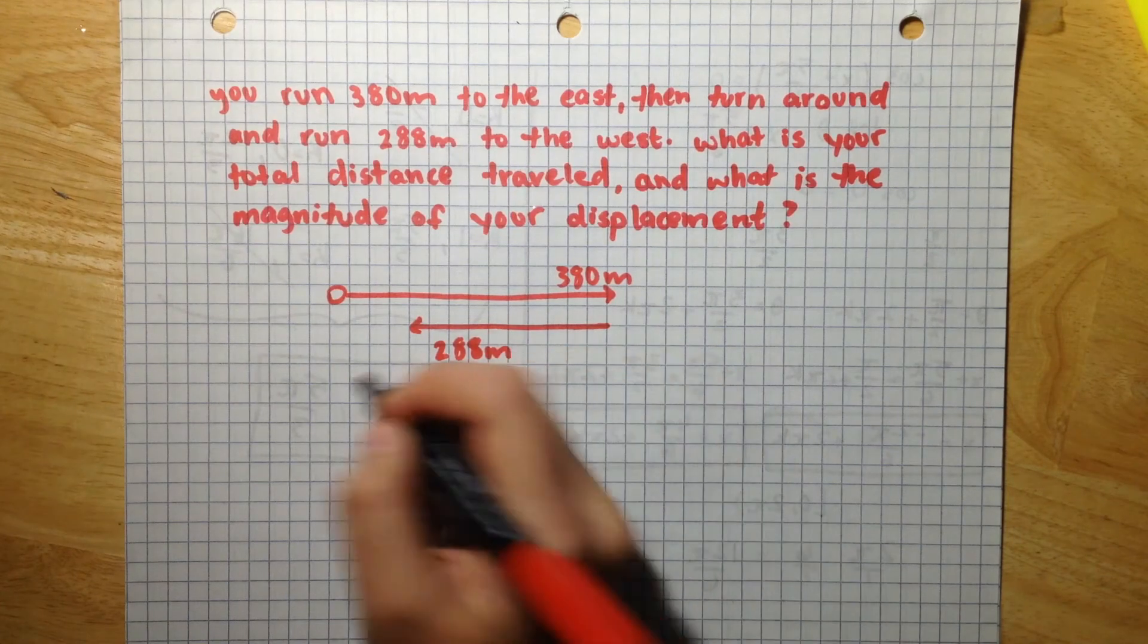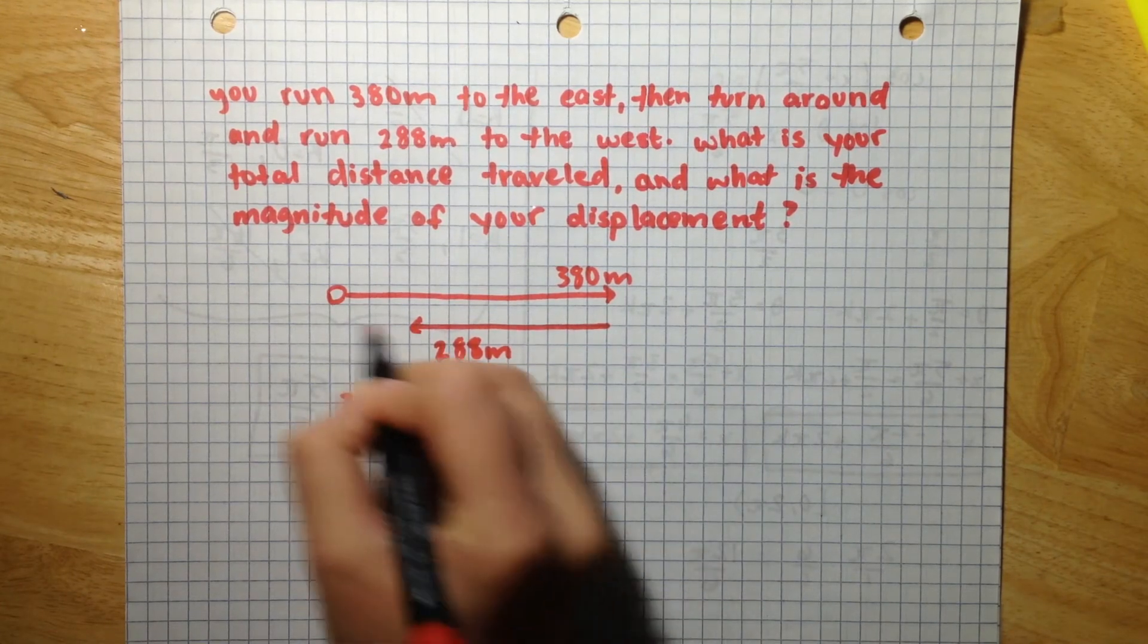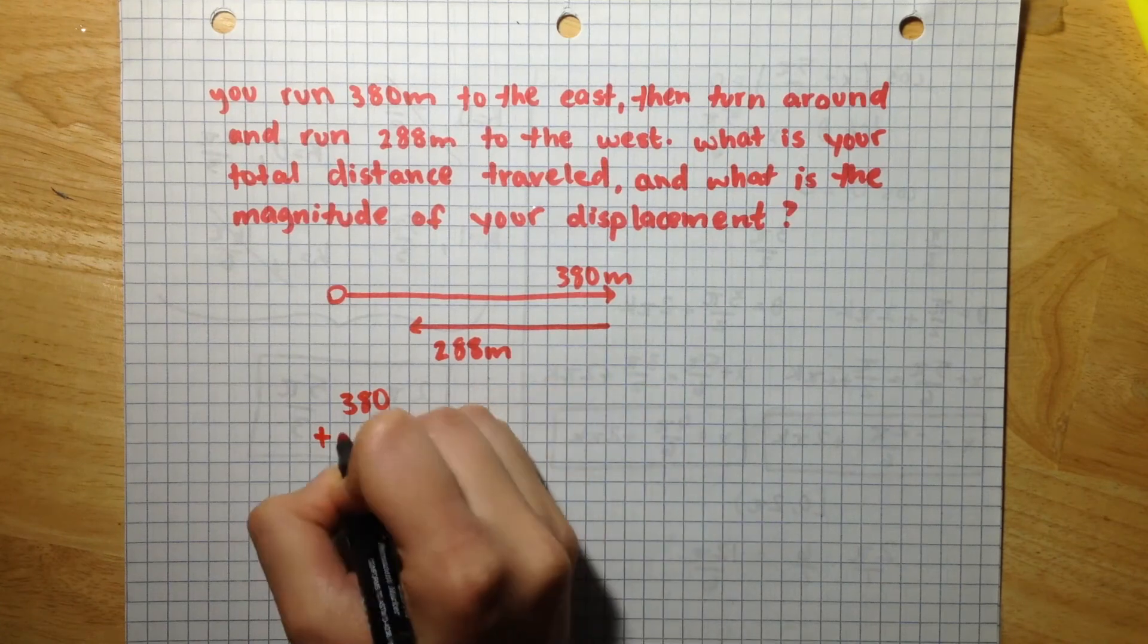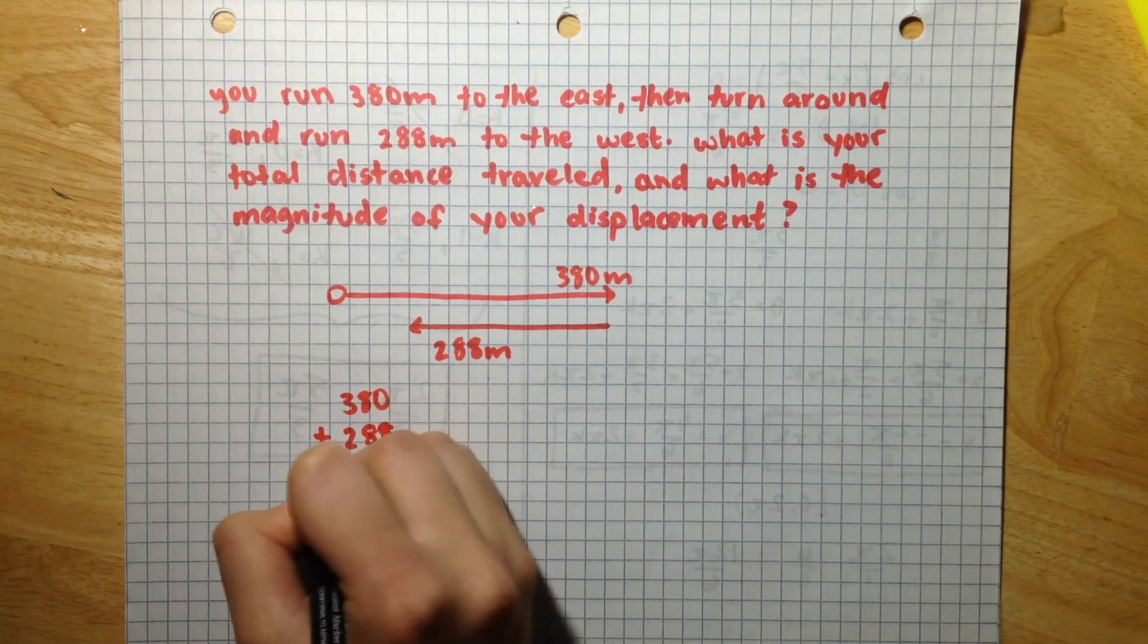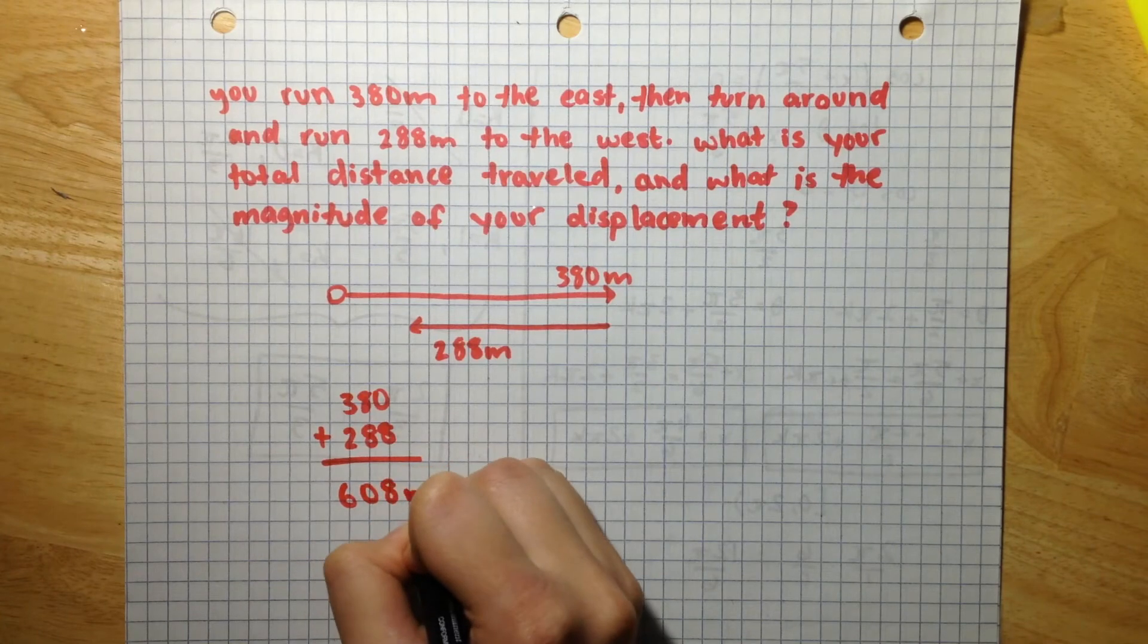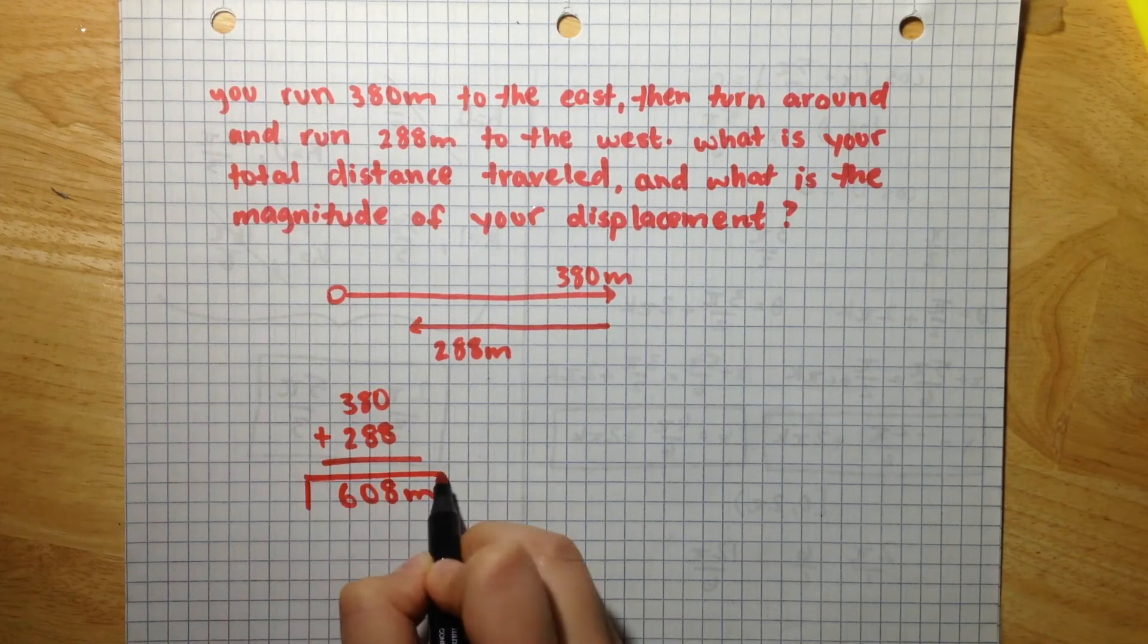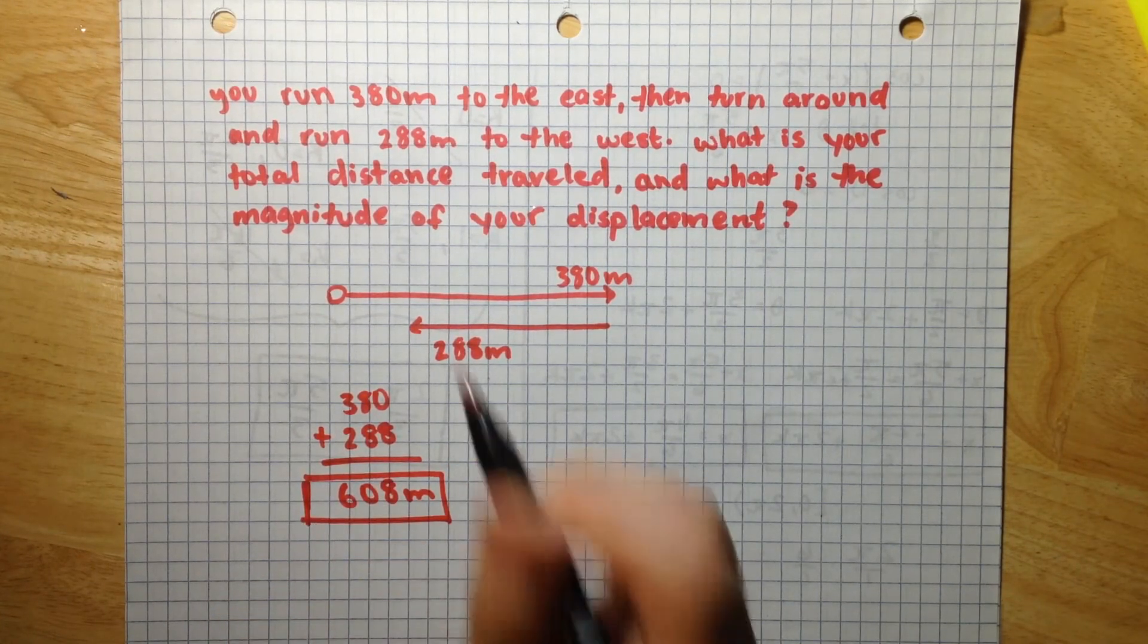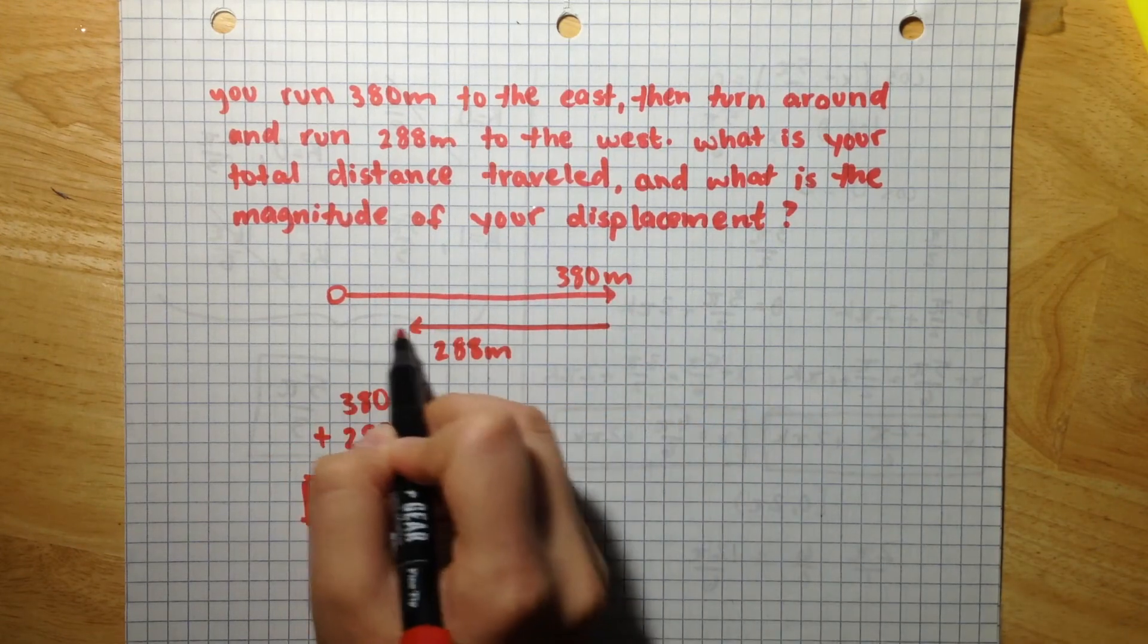So, total distance traveled will be 380, which you ran this way, plus 288. And that gives us 608 meters for the total distance traveled, this plus this.